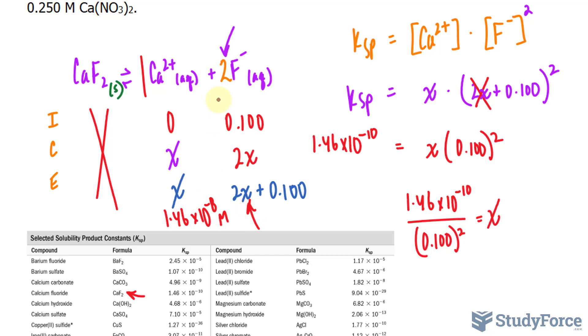Now just for comparison, the molar solubility of calcium fluoride in pure water is 3.32 times 10 to the power of negative 4 molar. Which means that calcium fluoride is over 20,000 times more soluble in water than in a sodium fluoride solution. And of course you can confirm this yourself by calculating the solubility in pure water from the value of Ksp.